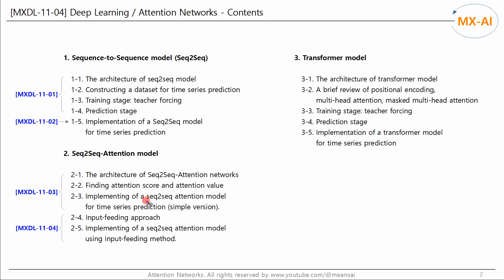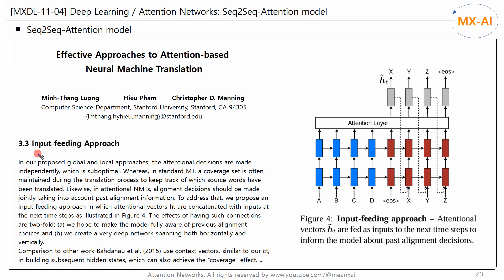In the last video, we implemented a simple seq-to-seq attention model to predict time series. In this video, we will add a feature called the input feeding method to the existing seq-to-seq attention model. In the existing attention model, attention decisions are made independently, which is suboptimal. Attention information from previous stages is ignored in the next stage, which causes over-translation and under-translation problems.